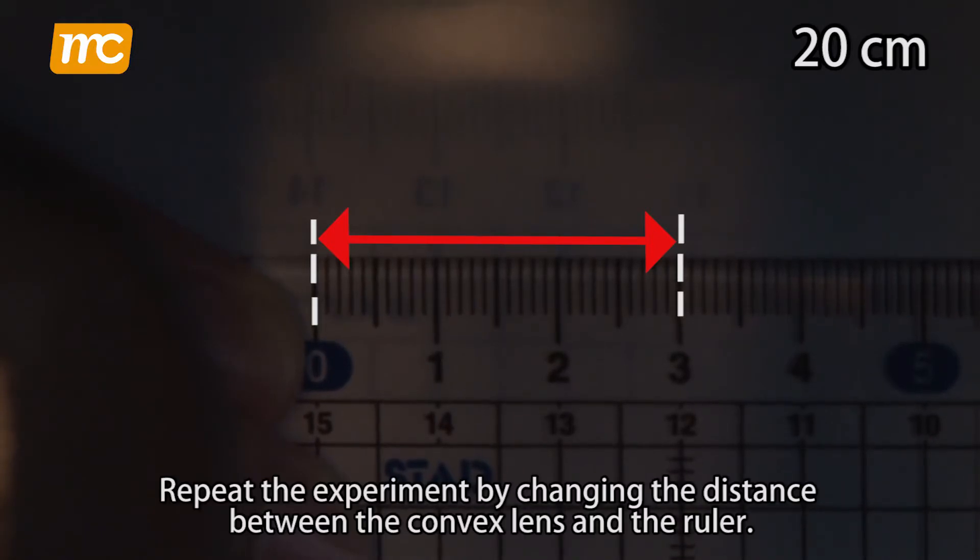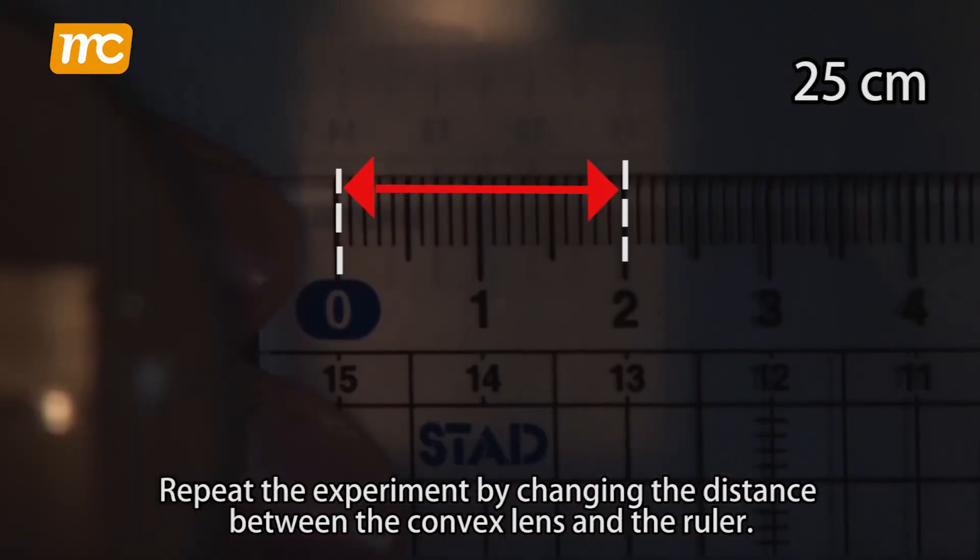Repeat the experiment by changing the distance between the convex lens and the ruler.